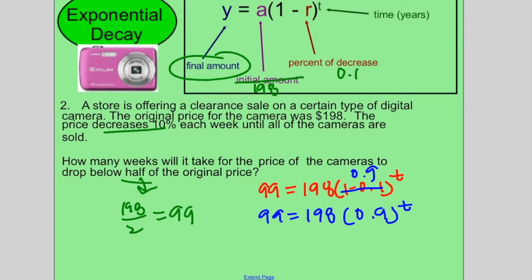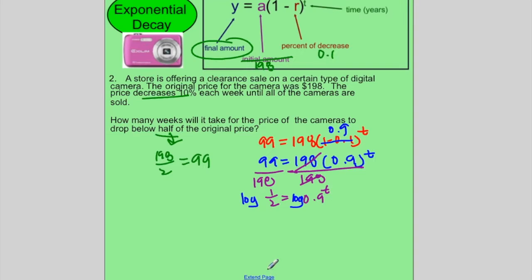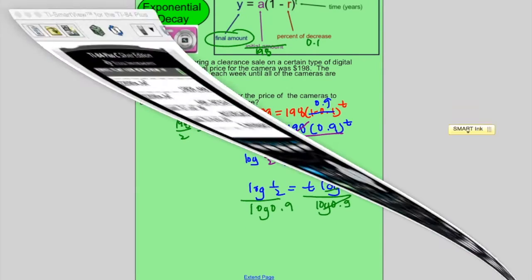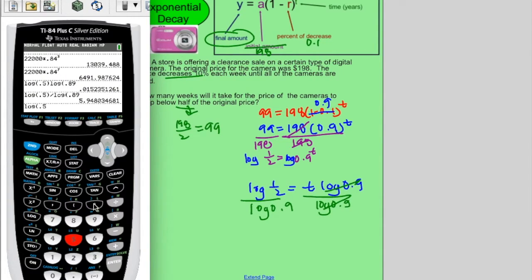I would solve this. First thing I would do is rewrite this as 0.9. Now I would divide by $198. This gives me 1 half equals 0.9 to the t. Then we would take log on both sides. I have log of 1 half is equal to t log of 0.9. Then I would go ahead and divide both sides by log of 0.9. If I type this in, I would have log of 0.5 divided by log of 0.9. And that will give me my time, which is 6.579.